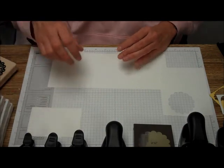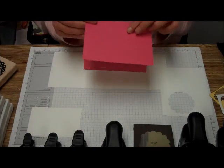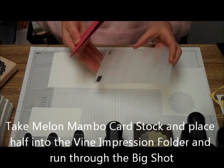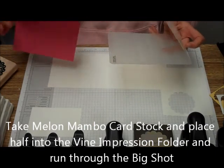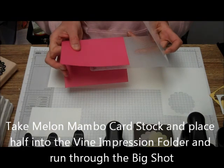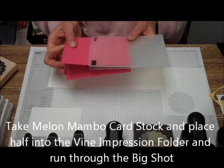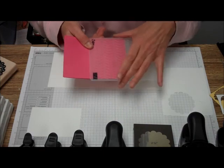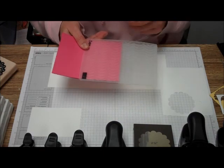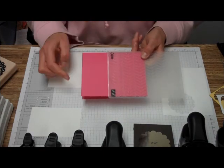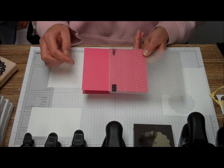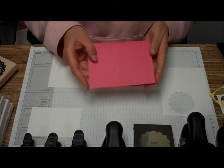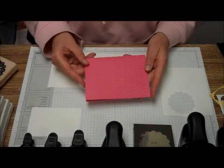The first thing we're going to do is take your Melon Mambo cardstock and put half of it into the Vine Impression Folder. The folder has six vines and we're just going to use three of them. We're only going to do about half of the card front. We're going to run that through the Big Shot and it comes out looking just like this. We're going to put the quintessential flower over on the non-embossed side.